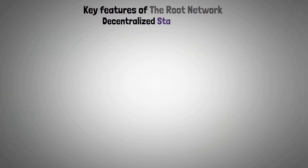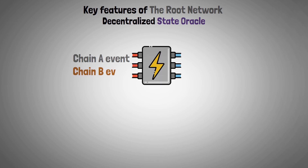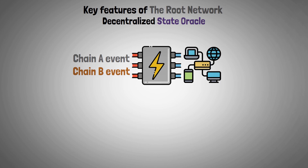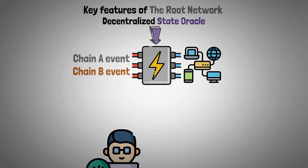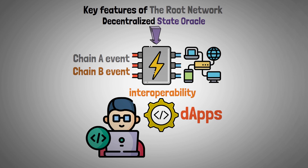Decentralized State Oracle: It is possible to connect events on different chains to network actions, thanks to the State Oracle. The network provides developers with the means to integrate interoperability into their DApps.